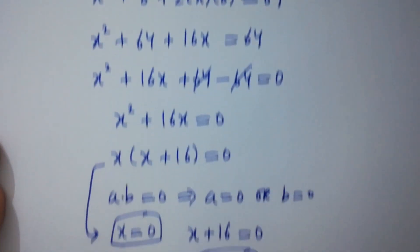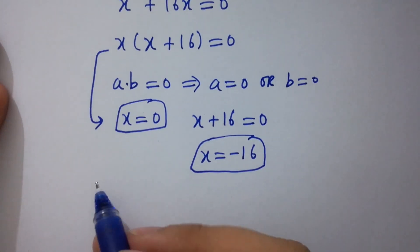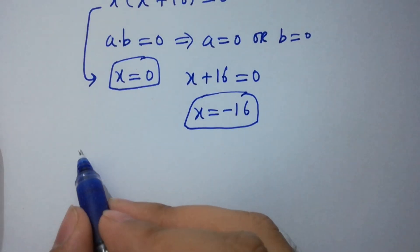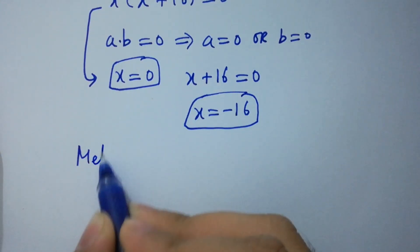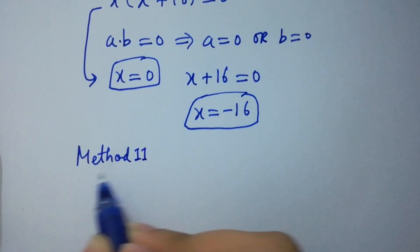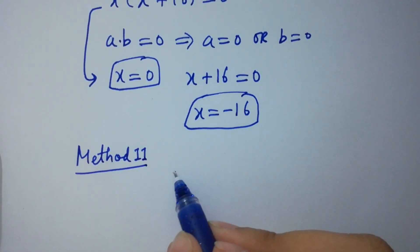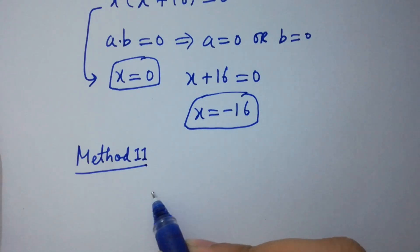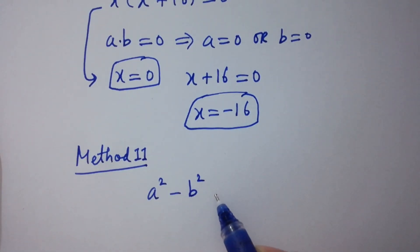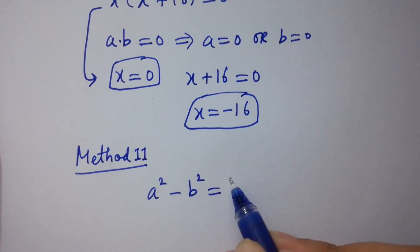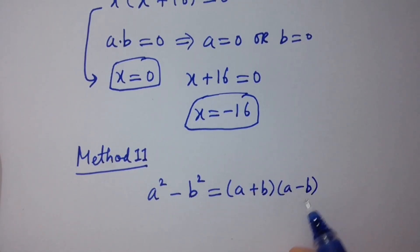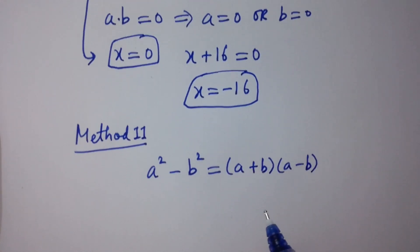Now I am going to solve this question by Method 2. Method 2 uses the identity a² − b² = (a + b)(a − b). We have the question here.